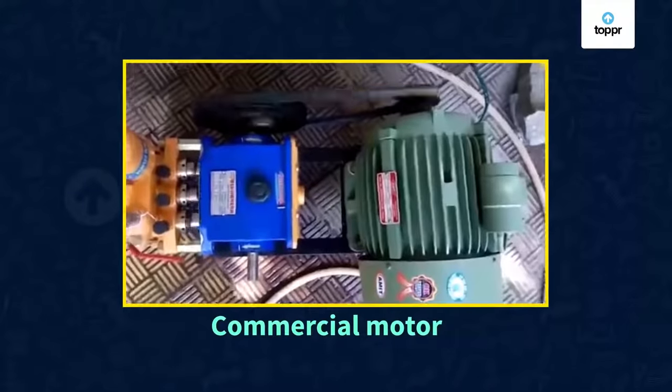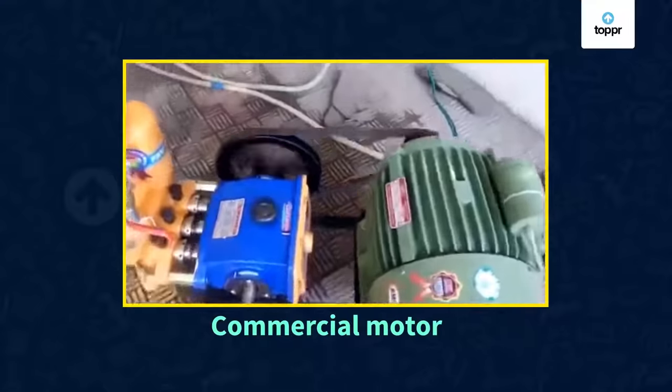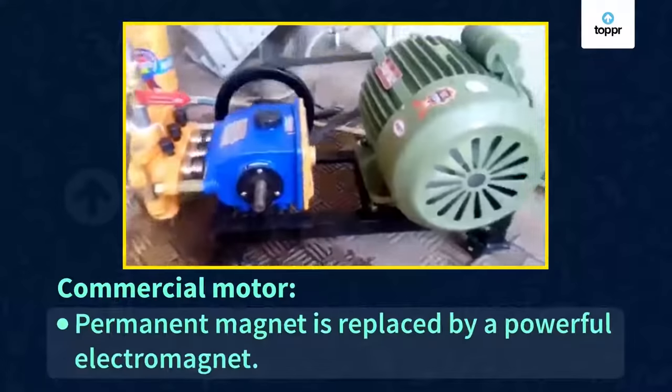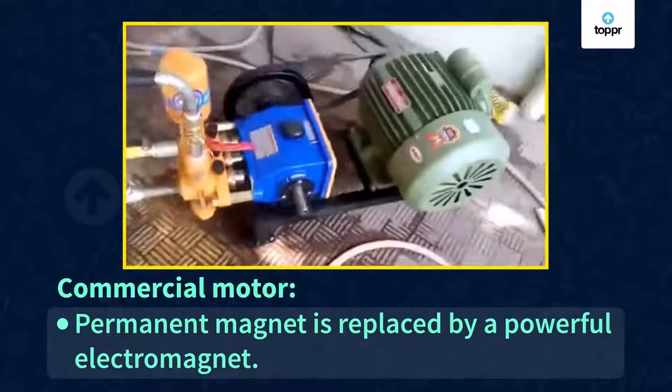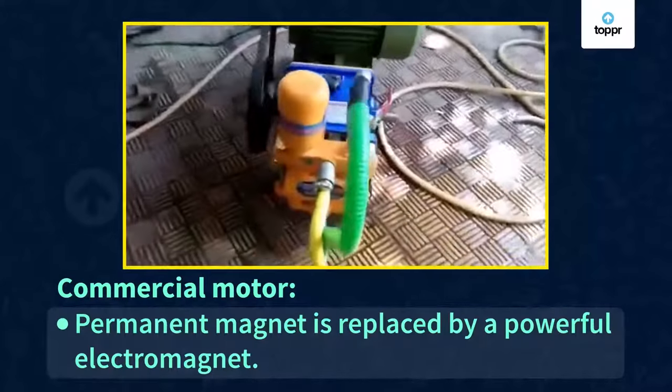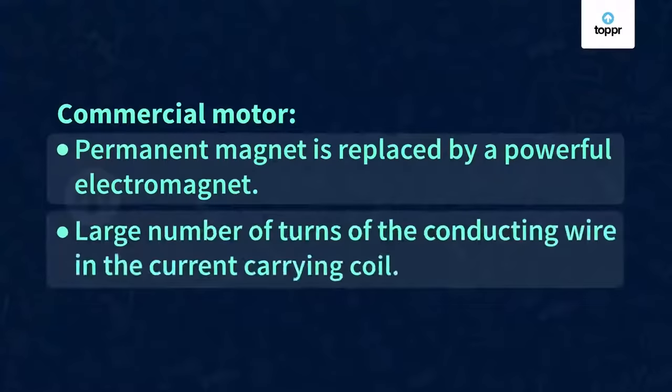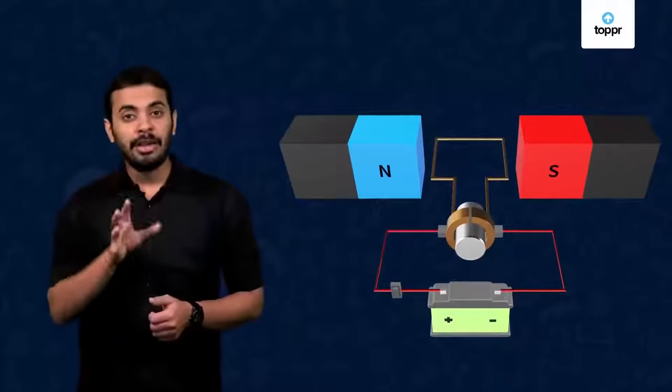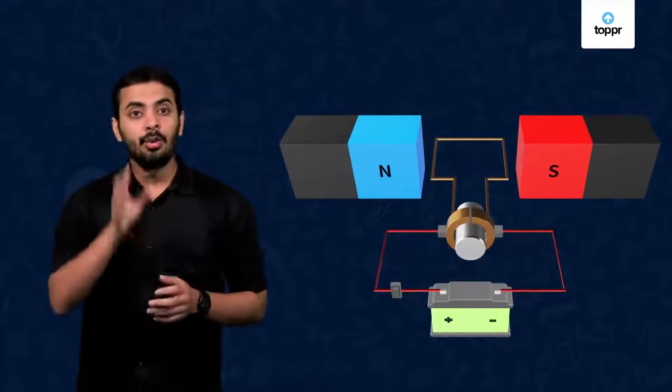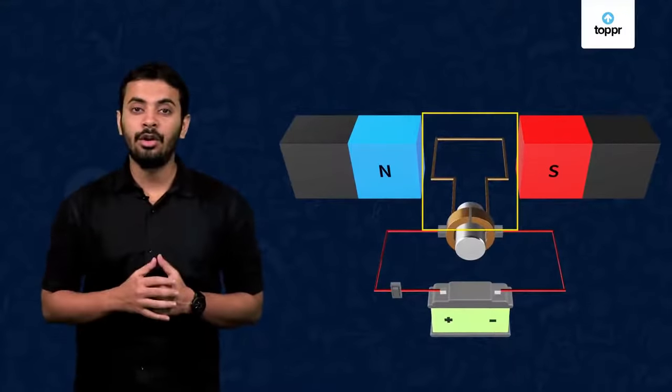A commercial motor comes with all the above implementations. The permanent magnet is replaced by a powerful electromagnet so that the strength of the magnetic field is high. It uses a large number of turns of the conducting wire in the current carrying coil. And finally, a soft iron core is placed inside the coil. The coil and the soft iron core on which the coil is wound is also called armature.